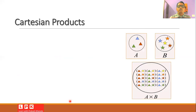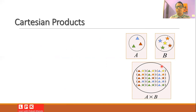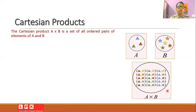Before going to the definition of relation, let us understand what we mean by the Cartesian product of two sets. Suppose we have a set A and a set B. From these two sets we can obtain a third set A cross B, which is called the Cartesian product of sets A and B. The Cartesian product A cross B is the set of all ordered pairs of elements of A and B.